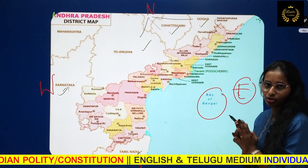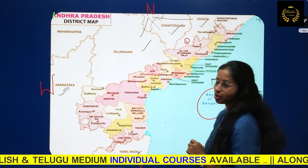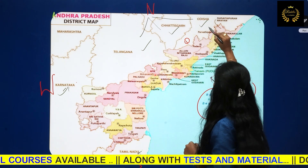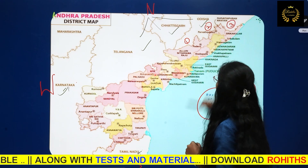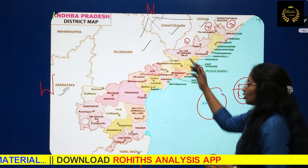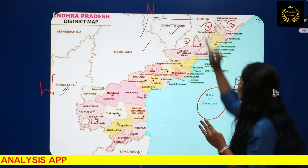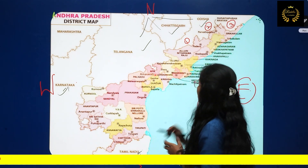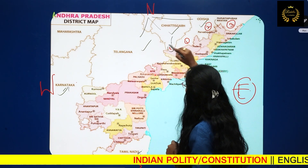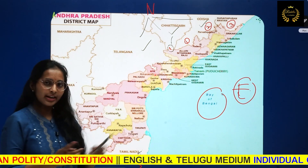Starting from the northern border — districts bordering Odisha: first is Alluri Sitarama Raju, second is Parvati Pura Manyam, and third is Shrikakulam. These three districts share border with Odisha. For Chhattisgarh, only one district shares the border — that is Alluri Sitarama Raju district, with headquarters at Paderu.